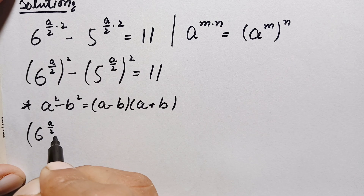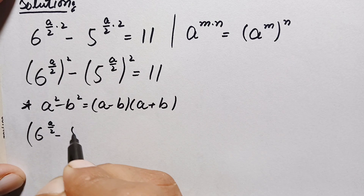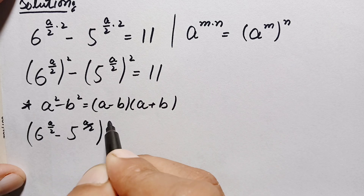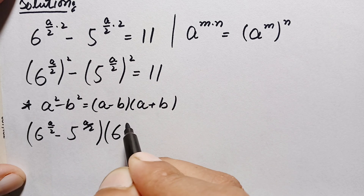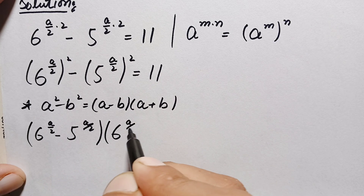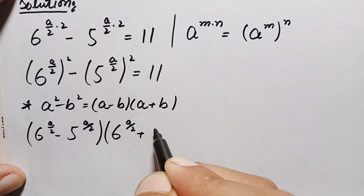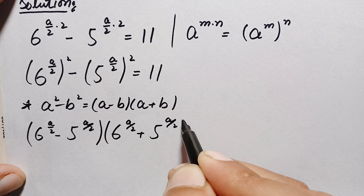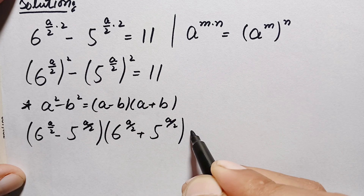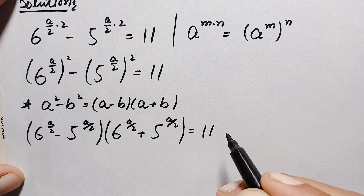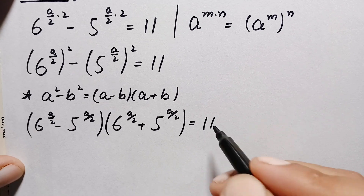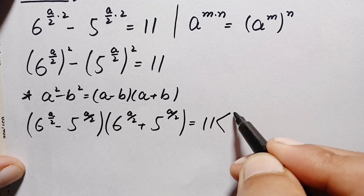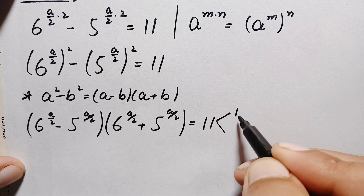Using this identity, the left hand side becomes: (6 raised to power a/2 minus 5 raised to power a/2) times (6 raised to power a/2 plus 5 raised to power a/2) is equal to 11.